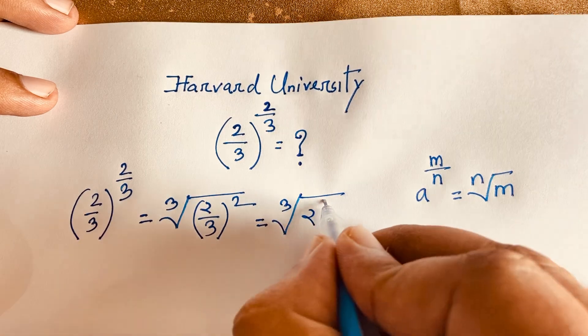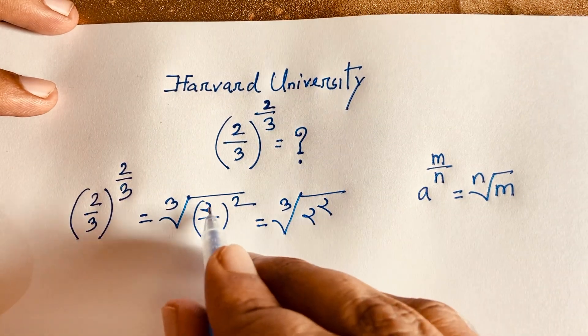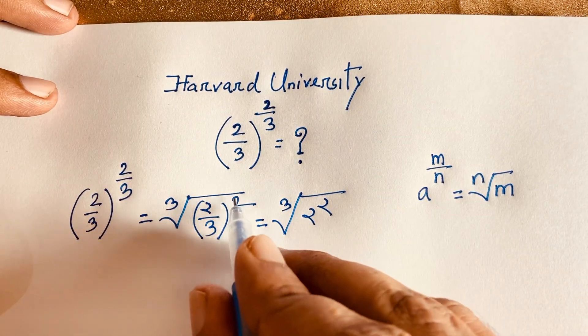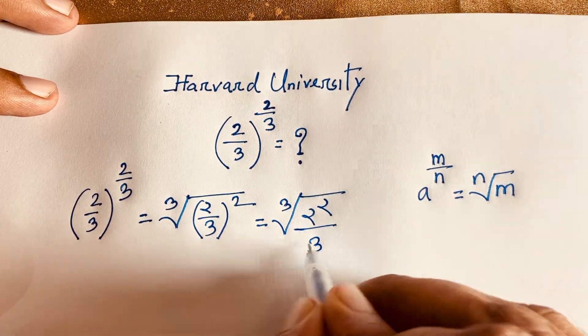We raise the fraction (2/3) to the power 2. So it becomes the cube root of 2 to the power 2 over 3 to the power 2.